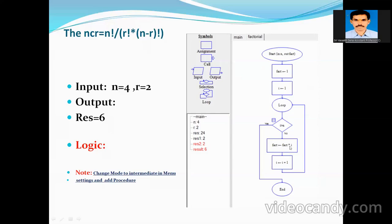Inside the loop: fact = fact × i. So i goes from 1 through 4 — 1×1, then 2×1, then 3×2, then 4×6 — giving us 4 factorial = 24. The value 24 is written out. In this way we are finding the factorial for the given number and storing it in the fact variable.